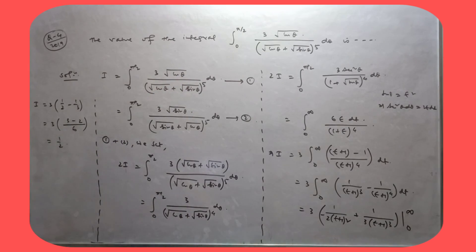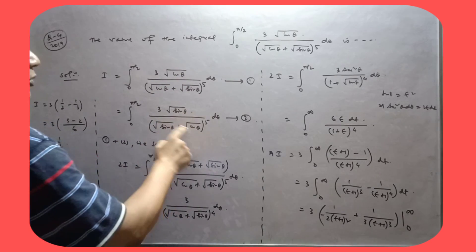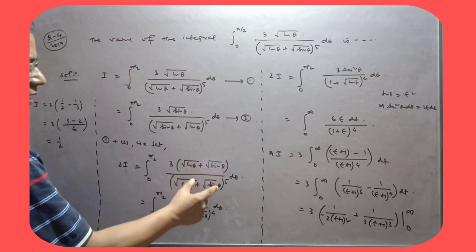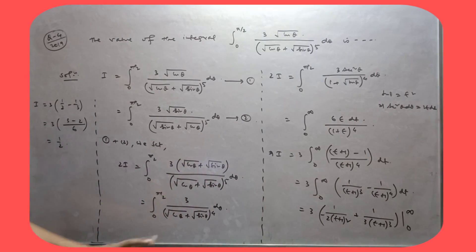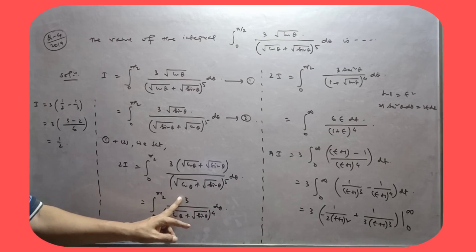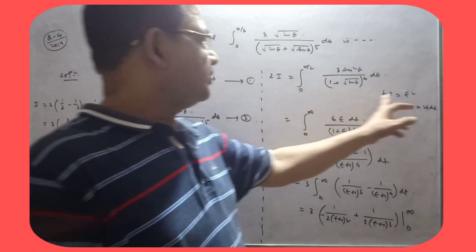So that is, dekho, theta ka jaga pe pi by 2 minus theta, to ee sin theta ho gya. Yeh, dekho, ee factor ee common ho gya. So ee factor ee factor cancel ho gya. Yeh pe root cos theta bahar le liya. To ee hi pe power 4 hai. To bahar pe pi by 2 theta, is upar uthalos x square theta.